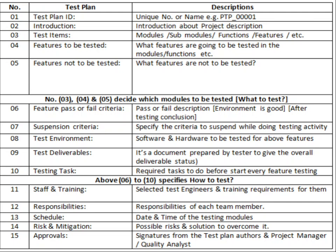Considering the test plan document, it first consists of a Test Plan ID, which is a unique number or name assigned to the test plan document. The next fields are: Introduction, Test Items, Features to be Tested, Features Not to be Tested, Pass or Fail Criteria, Suspension Criteria, Test Environment, Test Deliverables, and Testing Tasks.